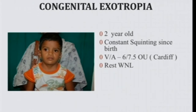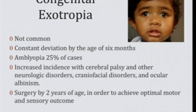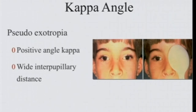In constant exotropia, there is no cross-fixation, so you must be cautious about underlying amblyopia. Amblyopia is associated in 25% of infantile exotropia cases. These children also have increased incidence of cerebral palsy and other neurological disorders, and oculoalbinism patients can have this. Surgery should be done at an earlier age, being careful not to create a consecutive isodeviation. For pseudo-exotropia, a positive angle kappa with wide interpupillary distance can simulate squint.